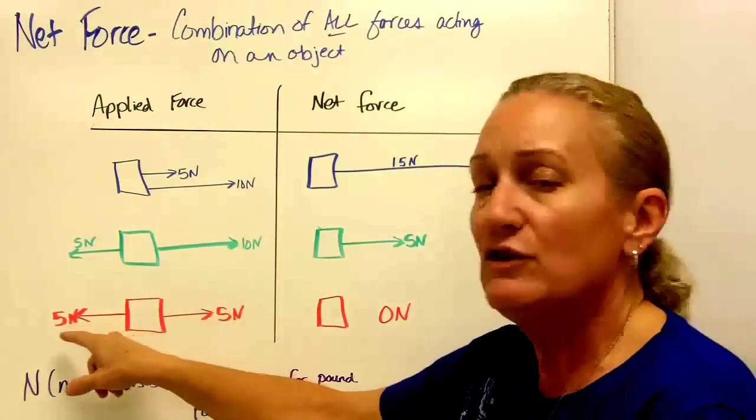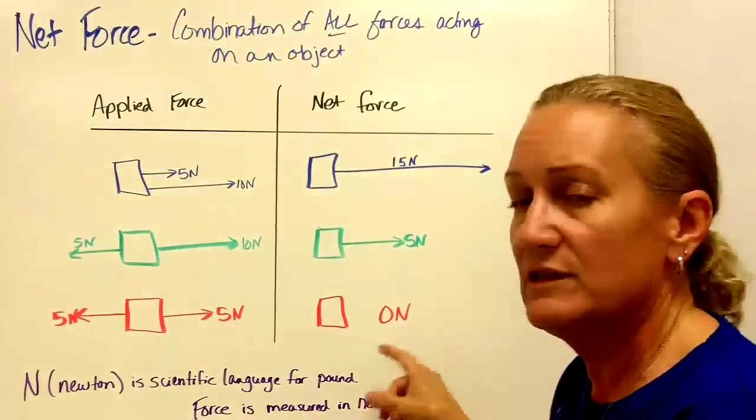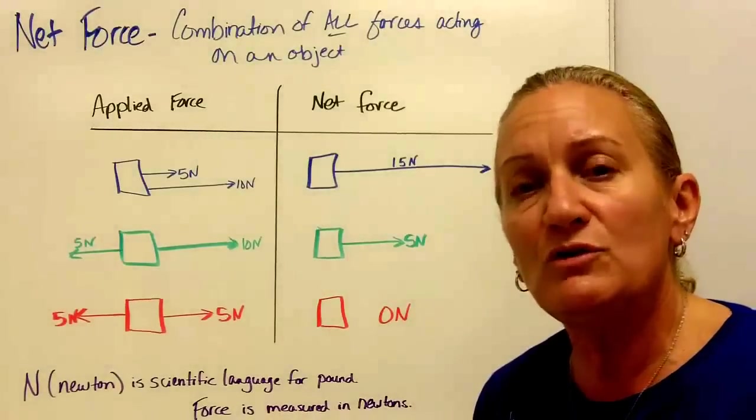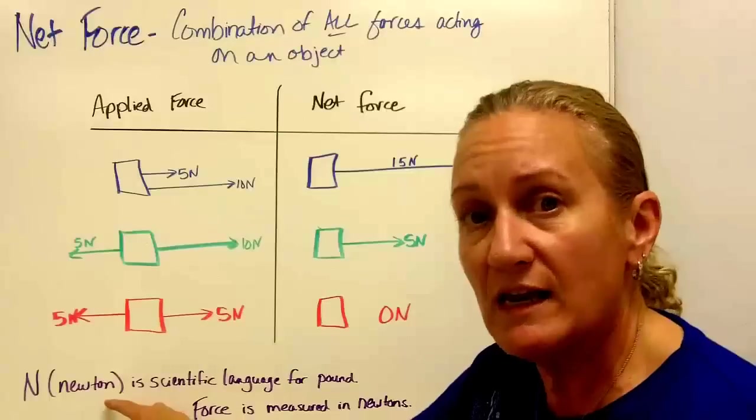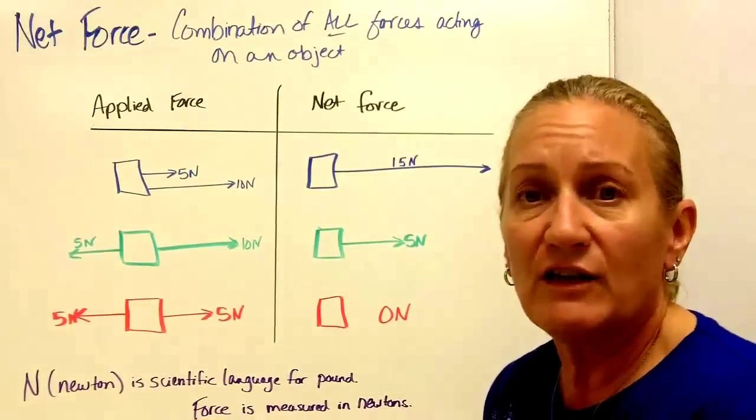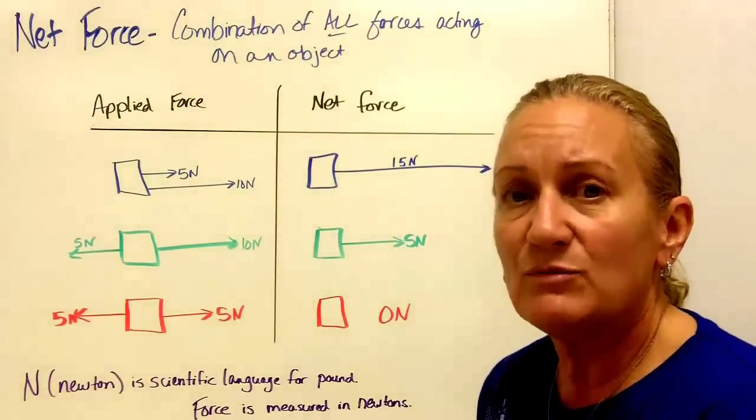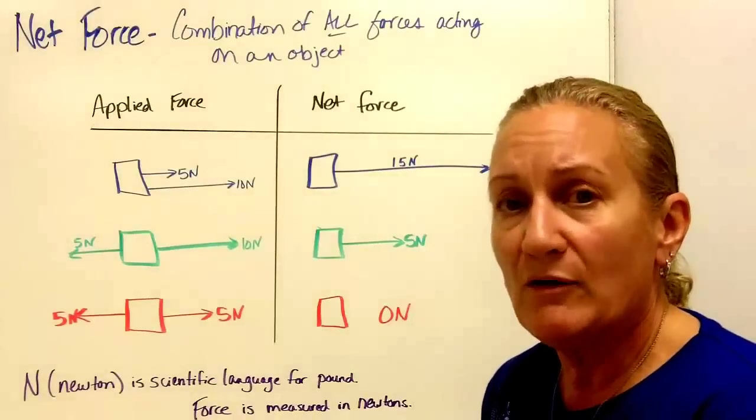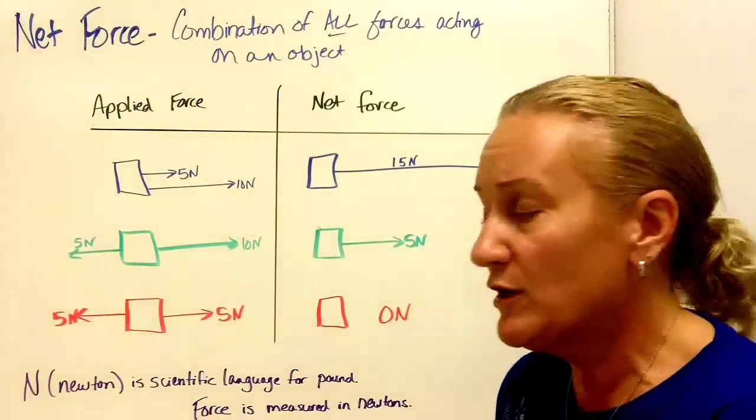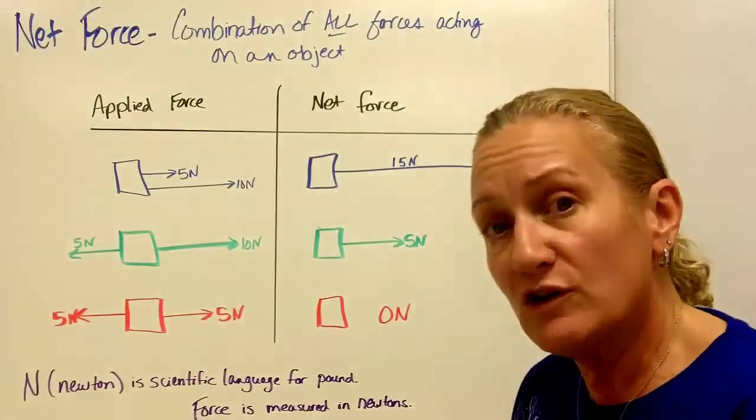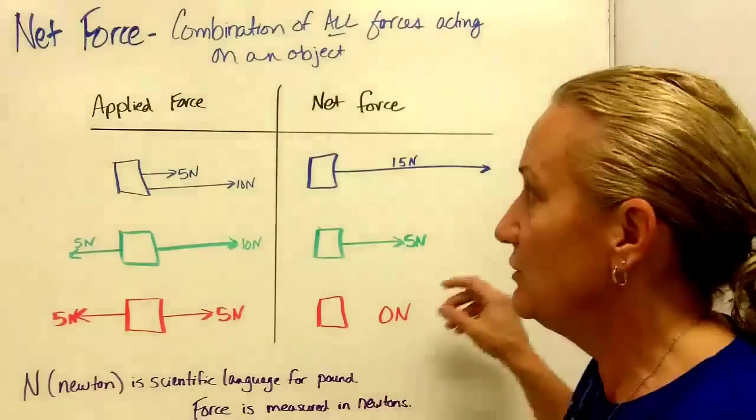If we have another box with 5 newtons to the left and 5 newtons to the right, those are going to cancel each other out and the net force is going to be 0 newtons. So I've been throwing around this word newtons. Newton, spelled N-E-W-T-O-N but abbreviated uppercase N, is just the scientific language for a pound. In science we talk about a newton instead of a pound. Force, the push or pull on an object, is measured in newtons.